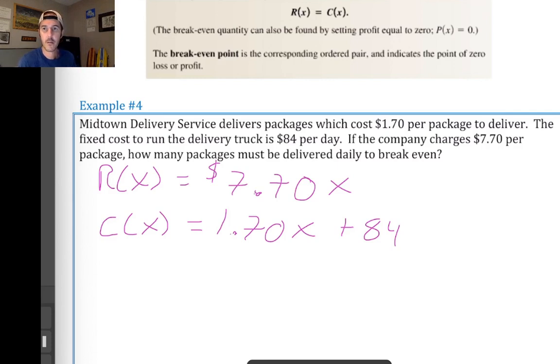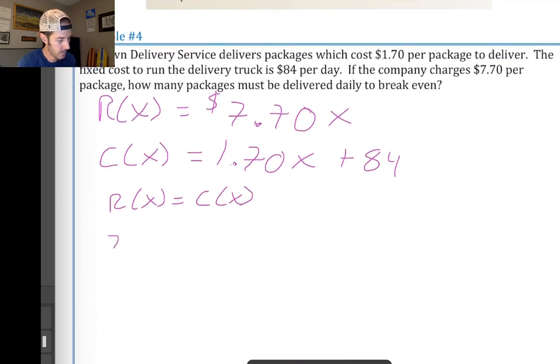And then in order to find the number of packages that must be delivered daily in order to break even, we're going to set revenue equal to cost. R of x equals c of x. That is 7.70 times x is now equal to 1.70x plus 84.